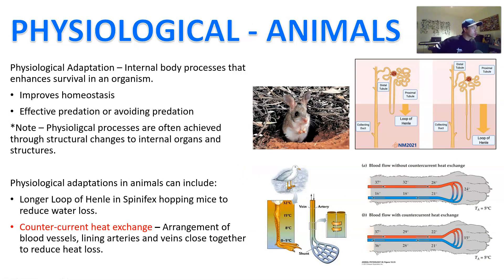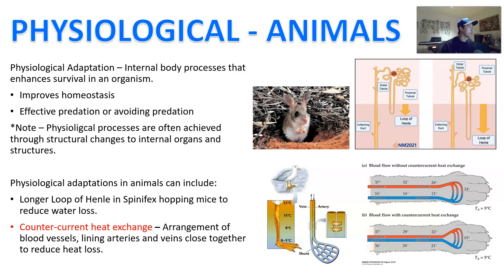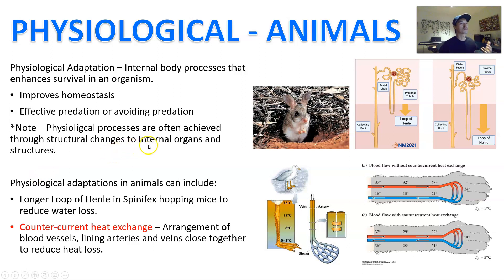Now let's talk about physiological adaptations. Physiological refers to the internal body processes that enhance the survival of the organism. Physiological adaptations usually improve homeostasis and make effective predation or avoiding predation more likely. It's worth noting that the way the body works also relies on structural changes — you need to have the accompanying structural traits to match your physiological adaptation, so a lot of animals that have physiological adaptations will have internal structural adaptations to match.